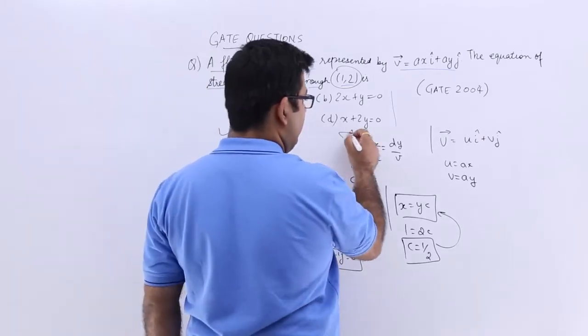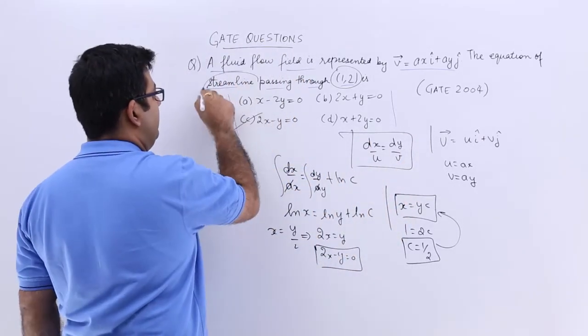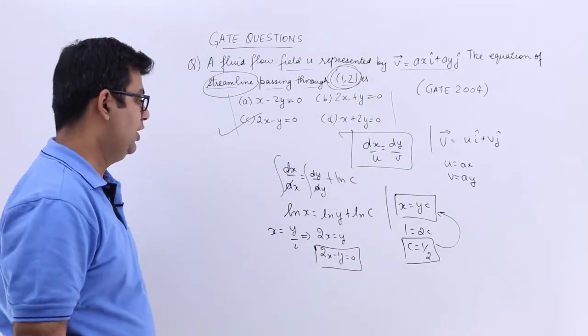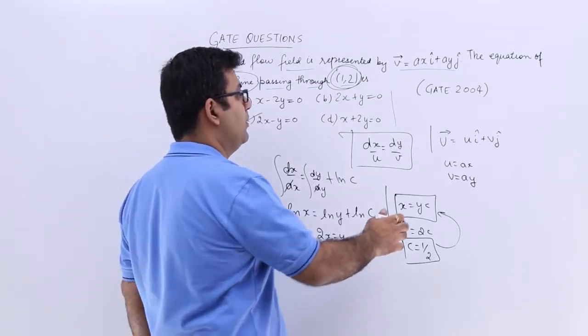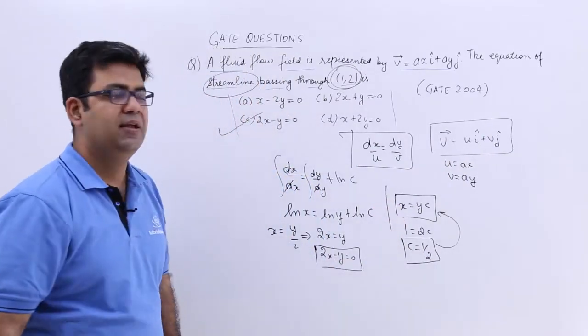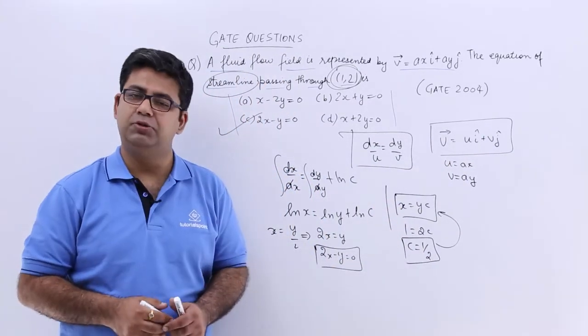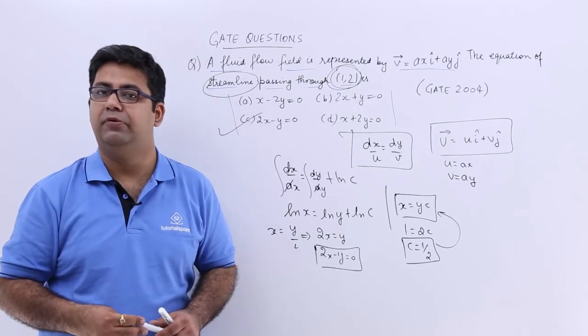So in this, you have to remember the equation of a streamline and then simply put the values (1,2) to get the equation. Also, you need to remember the general form of the velocity vector in any flow field. So I hope you understood this. Now let us move on to question number 4.